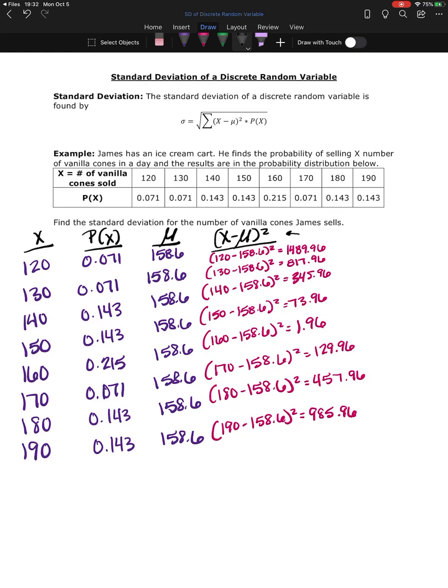But now I have one more column that I had to erase and that's to take the deviations which is what I just found and multiply them by the probability for that x value. So for this last column I'm going to take the 1489.96 times 0.071 and when I do that I get 105.78716. The more decimals you can keep while you do this the more accurate your answer is going to be at the end.